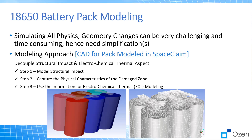There are three main steps to model this. It is a very complicated process so we have to break it down. In step one we model the structural impact. In step two we capture the physical characteristics of that damaged zone, and in step three we use that information for the electrochemical thermal modeling.